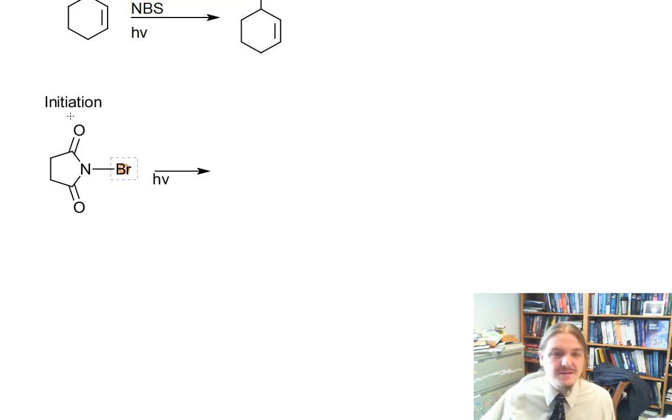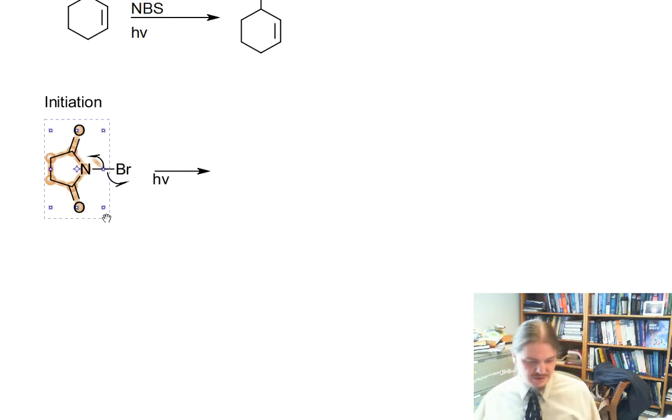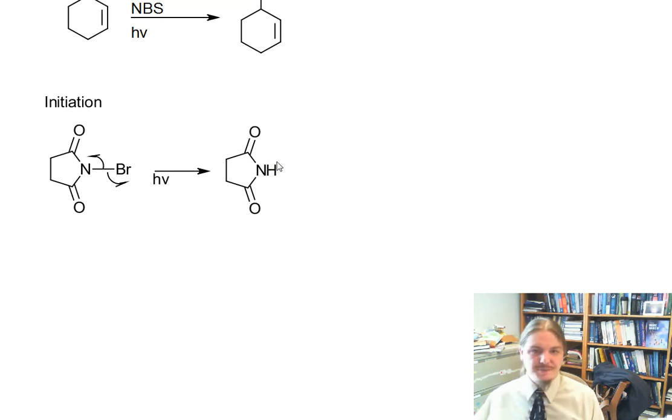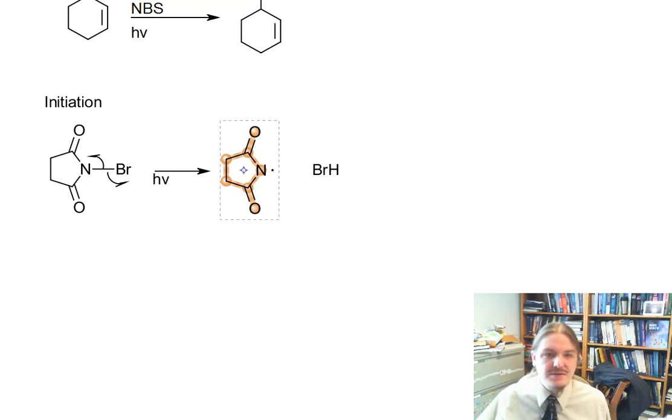It needs a little bit of energy input for this to happen, and under UV irradiation of N-bromosuccinimide, you can get a homolytic cleavage of this nitrogen-bromine bond. And so you get the succinimide radical and the bromine radical.